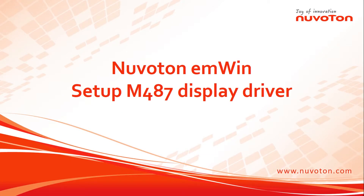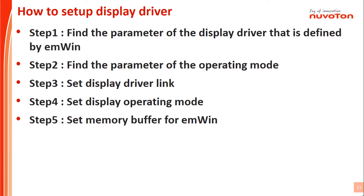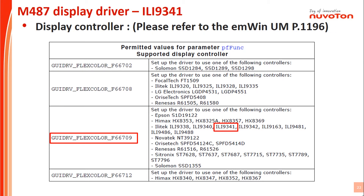Now let's talk about how to set up LCD sizes and driver. Step 1: find the parameter of the display driver defined by EMWIN. Step 2: find the parameter of the operating mode. Step 3: set display driver link. Step 4: set display operating mode. Step 5: set memory buffer for EMWIN. EMWIN supports many LCD drivers. Before getting started, we need to know the driver IC of our LCD module. We also need to search for the driver chip supported by EMWIN on page 1196 in the EMWIN user manual document.